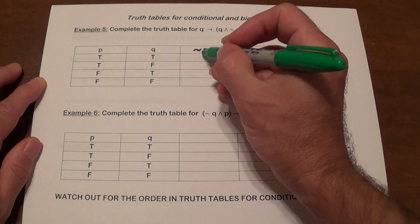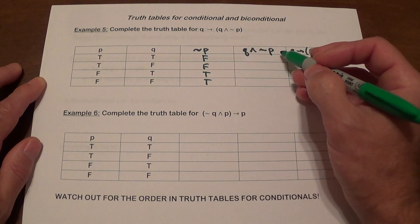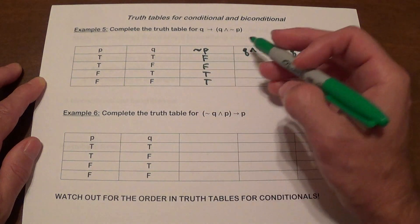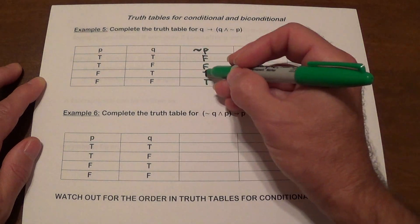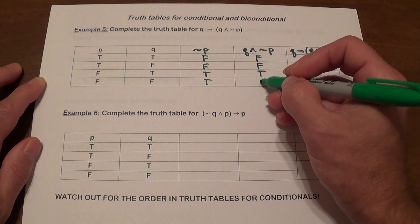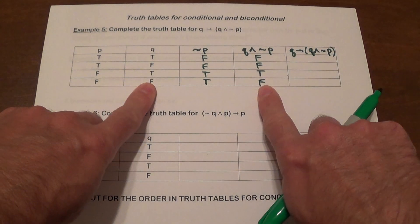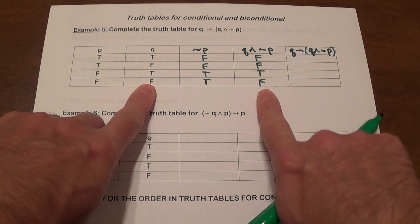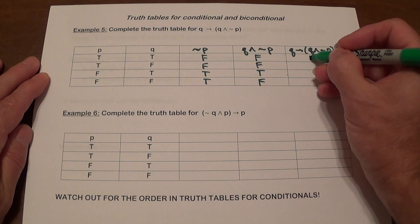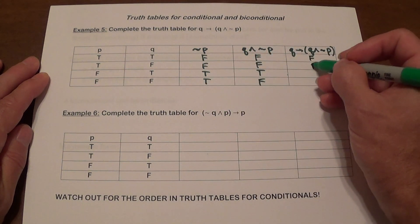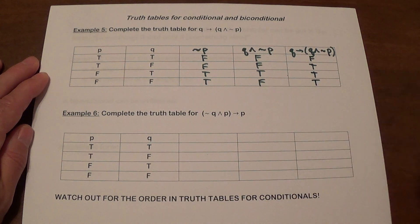For Q∧¬P, be careful with the AND: true-false = false, false-false = false, true-true = true, false-true = false. Now for Q→(Q∧¬P), working with those two columns: true-false gives false, false-false gives true, true-true gives true, and false-false gives true.